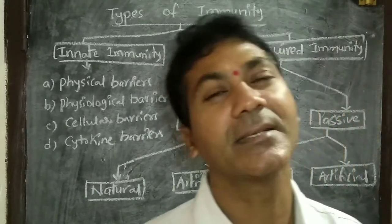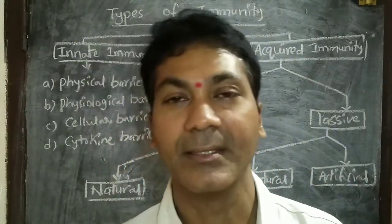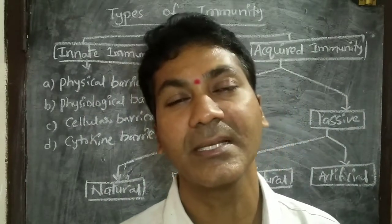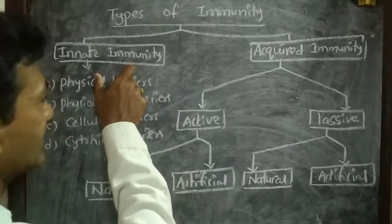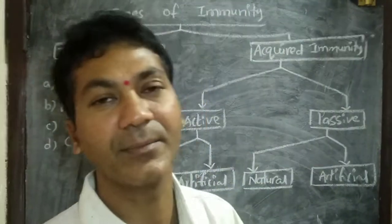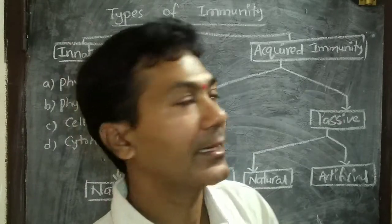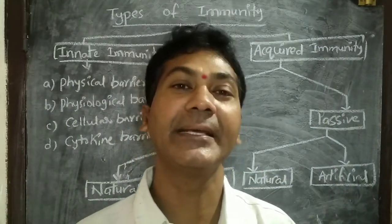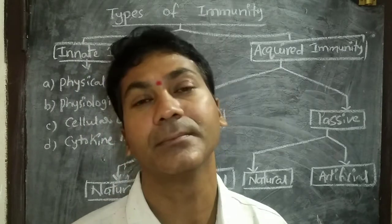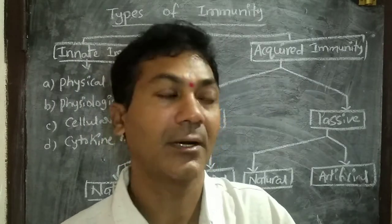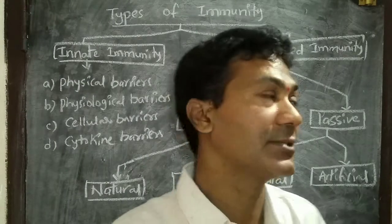The first type is innate immunity and the second is acquired immunity. Innate immunity is the inborn immunity — the inborn resistance to diseases possessed by an organism from birth. Acquired immunity is the immunity developed in the organism during its lifetime, developed against the response to a pathogen — what the organism gains after birth.